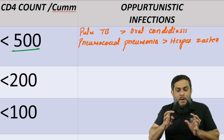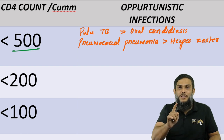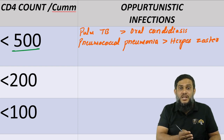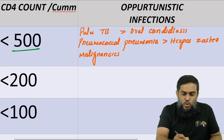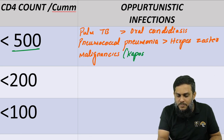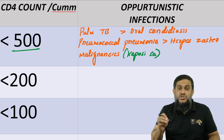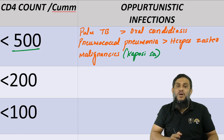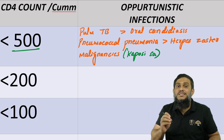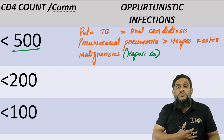Apart from these infections, an important finding when CD4 count falls below 500 is malignancies. The most common malignancy seen is Kaposi sarcoma. So these are five important manifestations to remember when CD4 count falls below 500 — pulmonary TB, oral candidiasis, bacterial pneumonia, herpes zoster, and Kaposi sarcoma.